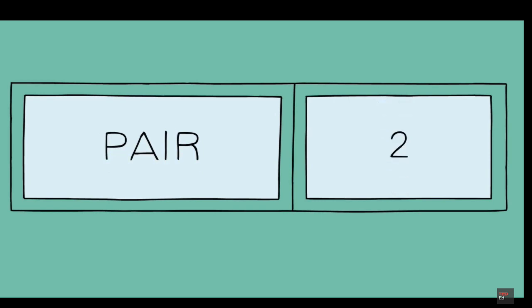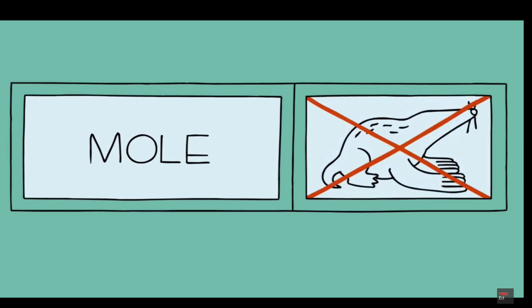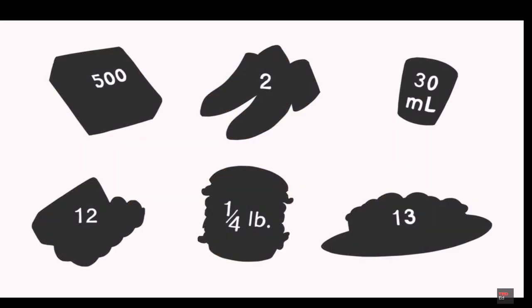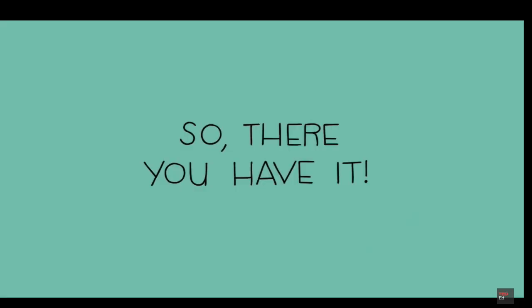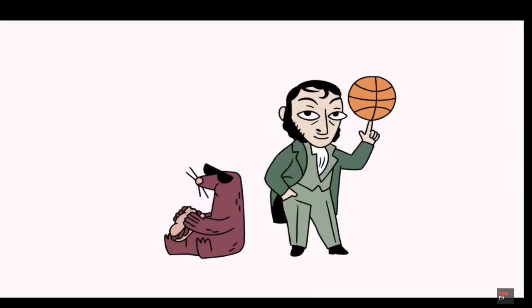When we hear the word dozen, we probably think of the number 12. We also know that a pair is 2, a baker's dozen is 13, a gross is 144, and a ream of paper is... Anybody? A ream is 500. Well, a mole is really the same thing. For a chemist, a mole conjures up the number 6.02 times 10 to the 23rd. Not a fuzzy little animal. The only difference is that the other quantities are more familiar to us. So there you have it. The story of the mole. Avogadro, basketballs, and how to buy salami at the grocery store.